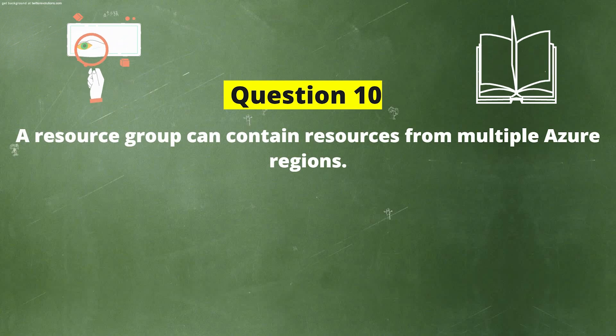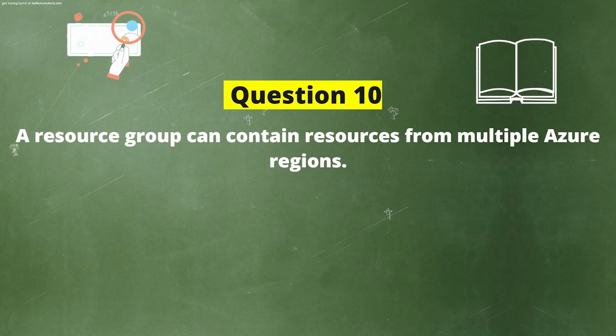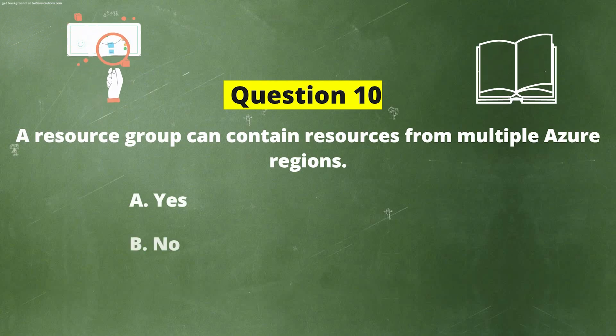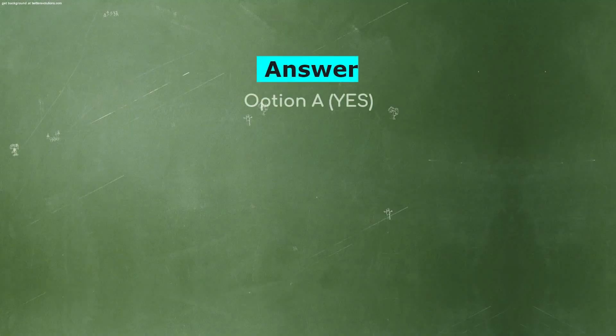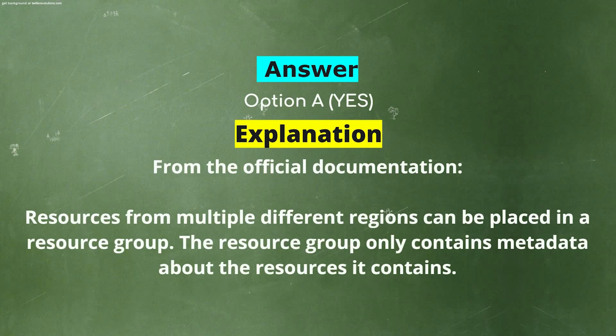Next question. The resource group can contain resources from multiple Azure regions. Option A: Yes. Option B: No. The correct answer is Option A — Yes. From the official documentation, resources from multiple different regions can be placed in a resource group. The resource group only contains metadata about the resources it contains.